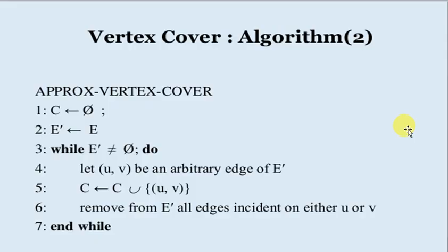Here is the proper algorithm for vertex cover. C is a set of pairs consisting of a graph and a positive integer. C equals phi, the null set. E' is the set of edges we are considering. While E' does not equal phi, let (U, V) be an arbitrary edge of E'. Remove all the edges incident on U or V from E'. End while.